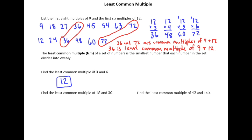If not, one strategy is to do what we did in the first example, but you don't necessarily need to make two different lists. I would suggest starting by just making a list with the larger number. So we'll start with 1 times 6. That's a multiple of 6, so you ask yourself: does 4 go into 6 evenly? The answer is no. So you try the next multiple of 6. Does 4 go into 12 evenly? Yes — and since 6 automatically goes into 12 evenly, there's your answer.